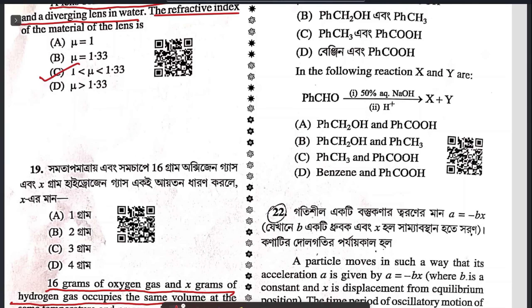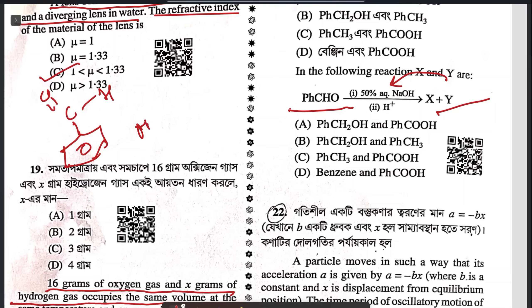Question 21: in the following reaction, benzaldehyde reacts with aqueous NaOH then H⁺ to form X plus Y. This is the Cannizzaro reaction — a disproportionation reaction. OH⁻ attacks and there is a migration of a hydride ion from one benzaldehyde to another, leading to the formation of benzoic acid and benzyl alcohol. The answer is A.